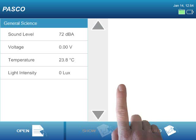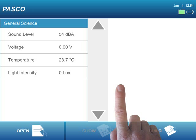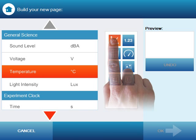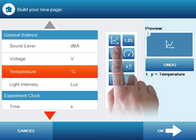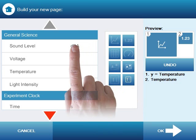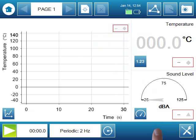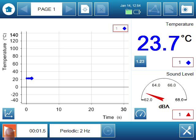And look at one final way we can use the Spark Science Learning System, by constructing and building our own investigation. If I select Build, I'm given the opportunity to design my own Spark Lab page by selecting measurements and the displays in which I'd like to see those measurements. When I press OK, the page I designed is created for me, and I can continue my investigation by collecting and analyzing data.